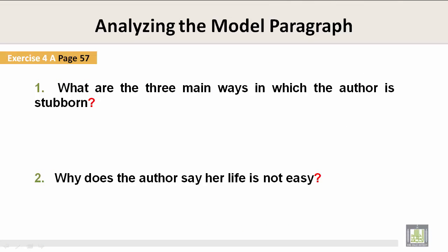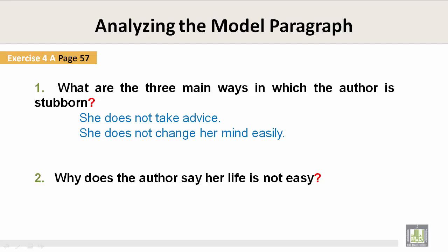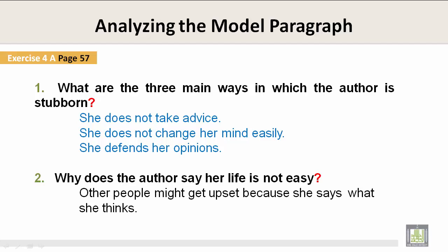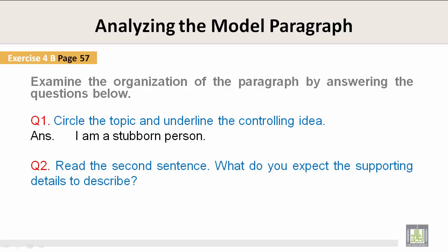Exercise 4A, page 57. What are the three main ways in which the author is stubborn? She does not take advice. She does not change her mind easily. And she defends her opinions. Why does the author say her life is not easy? Other people might get upset because she says what she thinks.